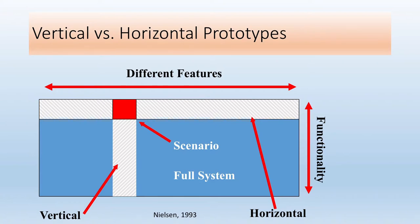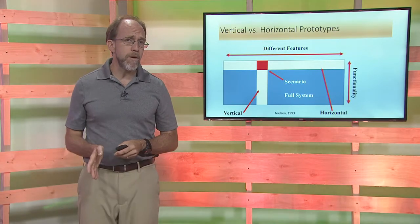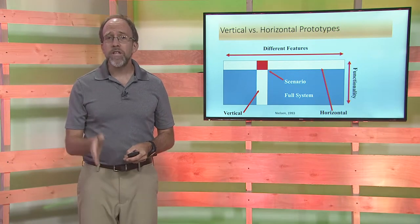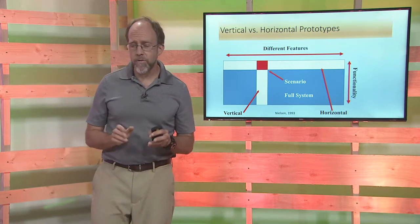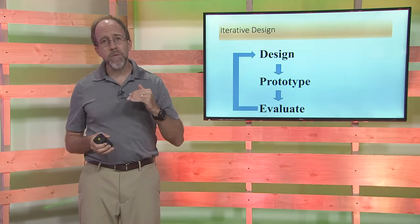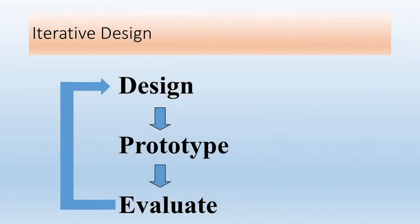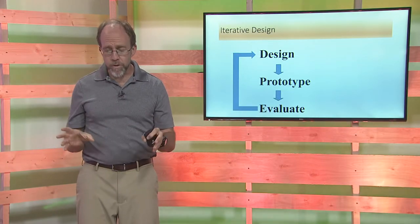One of the beauties of doing vertical prototyping within a horizontal prototype system is targeting the parts you know are going to be the most challenging for the user interface. Get those done and get a good interface for the things users are going to have real trouble with. Reminding back to the iterative design process — design, prototype, evaluate, repeat — we do it over and over again. As we go through this, we'll have to go through that evaluation phase. We build prototypes and we evaluate them.